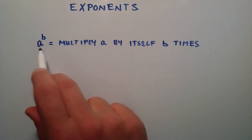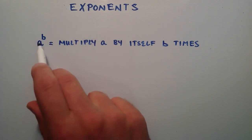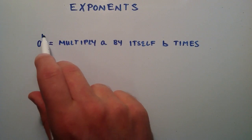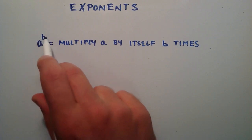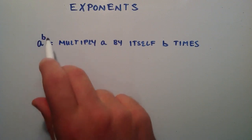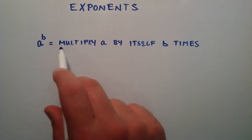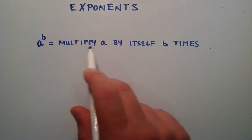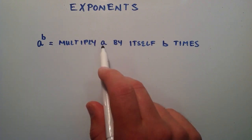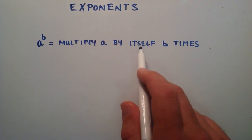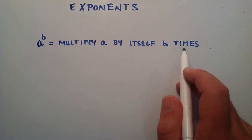If you have some number a, and it's raised to some power b, anything in this form basically means that we multiply the number a by itself b times.